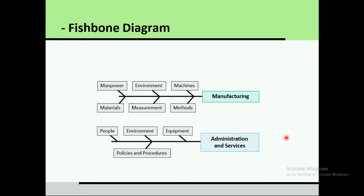In manufacturing, the primary factors are Man, Environment, Machines, Materials, Measurement, and Methods. In service industry or administration, the primary factors are People, Environment, Equipment, and Policies and Procedures. There are no materials or measurement categories in the service fishbone. Equipment in this context includes printers, scanners, and similar tools. Policies and procedures cover what was previously addressed under methods.